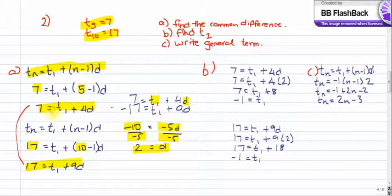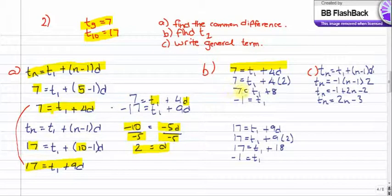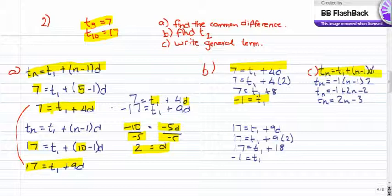Now we refer back to the first equation, 7 equals T1 plus 4D, to find T1. We fill in the common difference of 2, so 7 equals T1 plus 8. Subtracting 8 from both sides gives T1 equals negative 1. Now we have all the parts for the general term equation. Plugging in T1 equals negative 1 and D equals 2: negative 1 plus 2 times N minus 1, which simplifies to 2N minus 3.